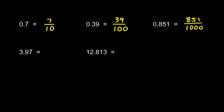Now look at this one, three point nine seven. I could write this as three, and then the point nine seven is ninety seven hundredths. So I could write that as a mixed number like that, three and ninety seven hundredths, but I could also write it as three hundred and ninety seven hundredths, as an improper fraction.